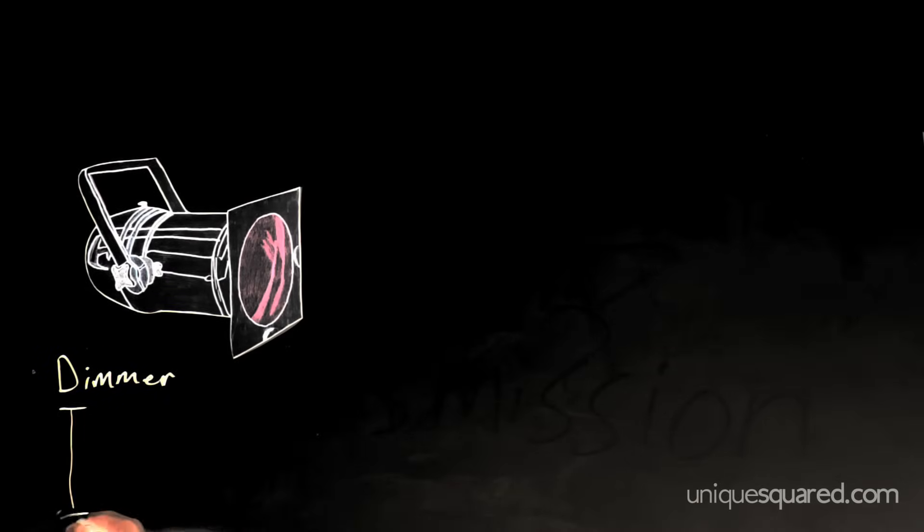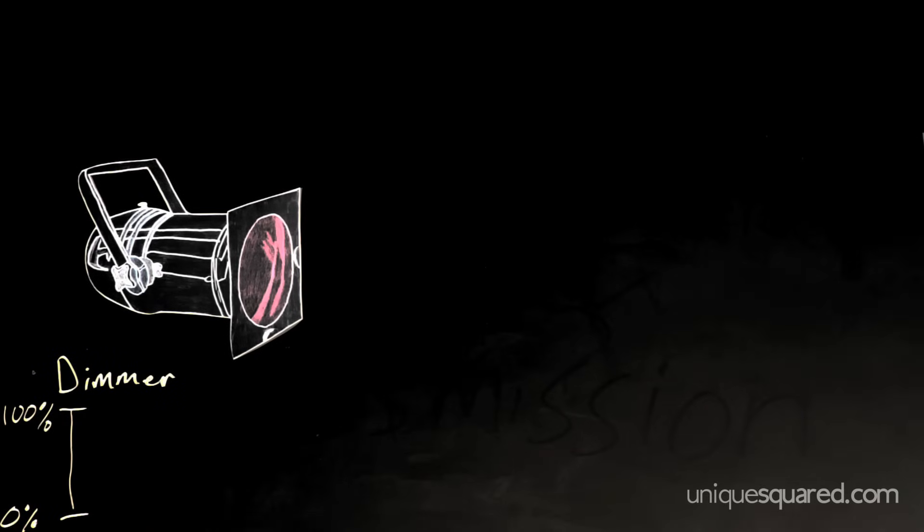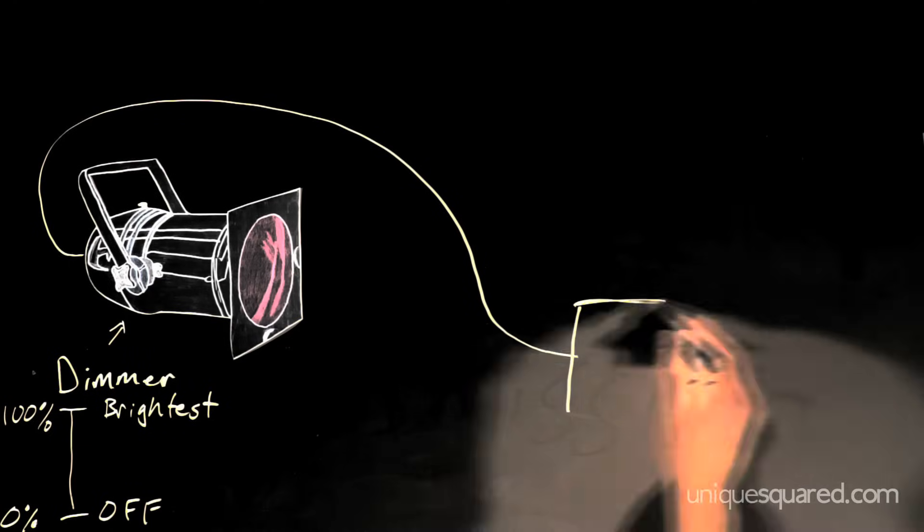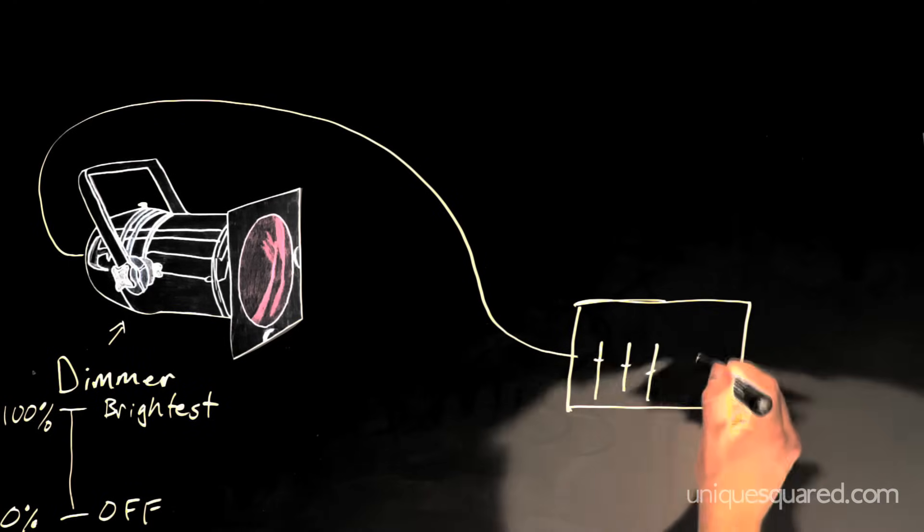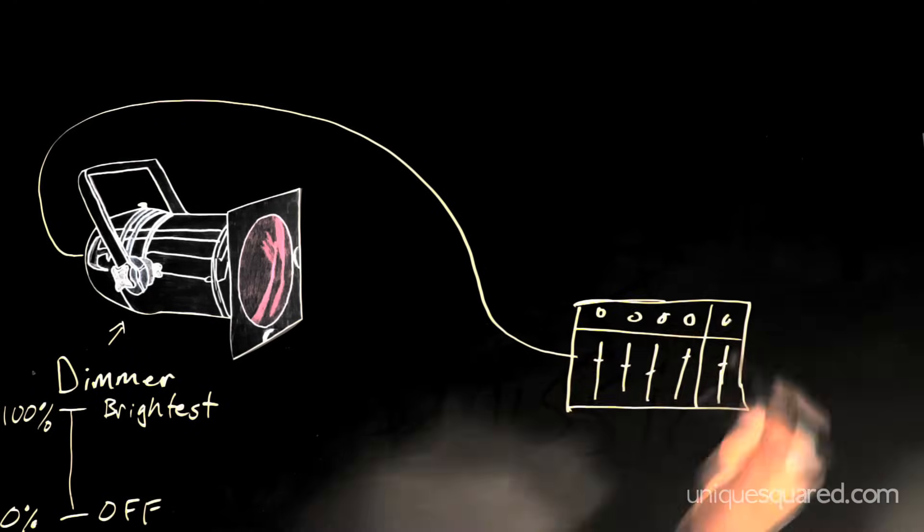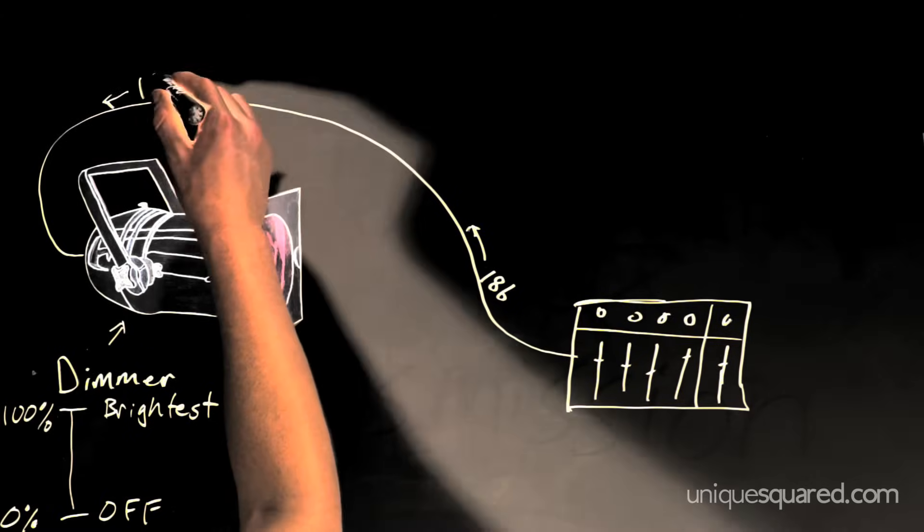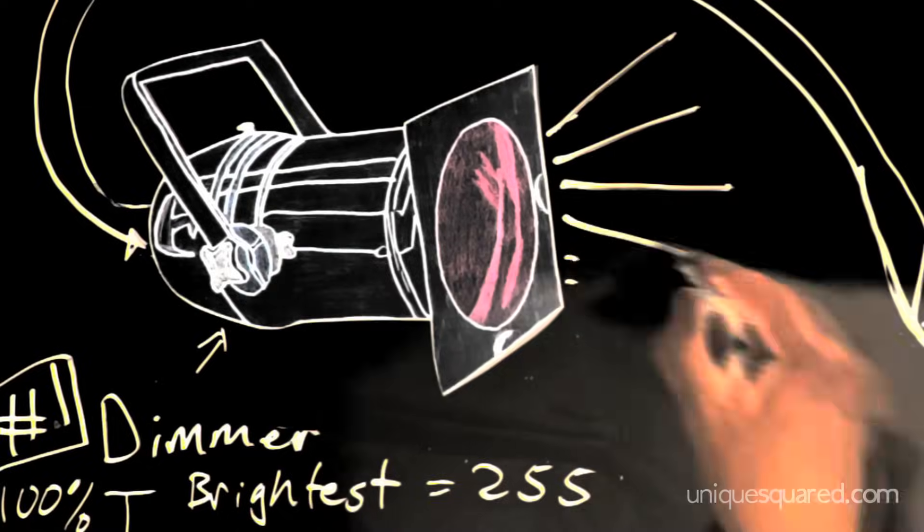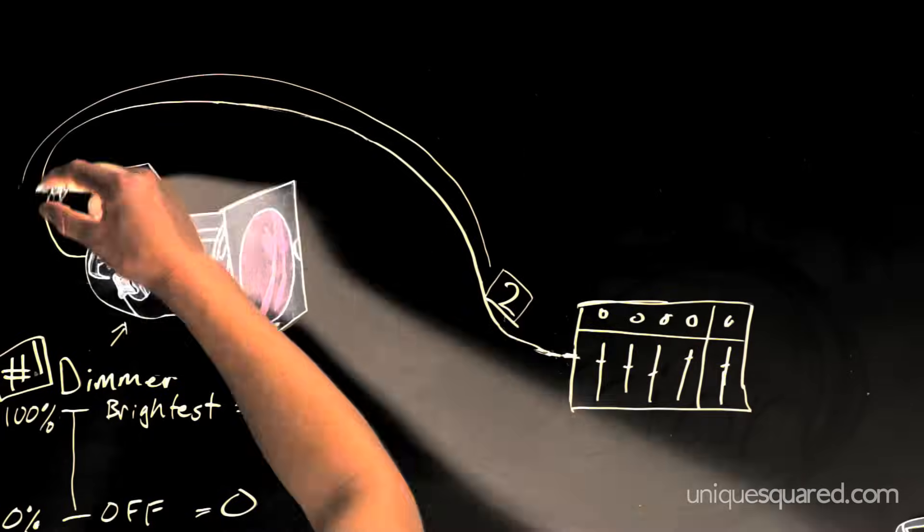Let's say we've got one light with one dimmer function. This function lets us control its brightness from zero to 100 percent. Let's say the light is connected to a line and we can pass different numerical values to the light through that line with a control device.